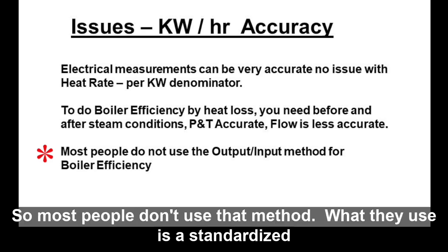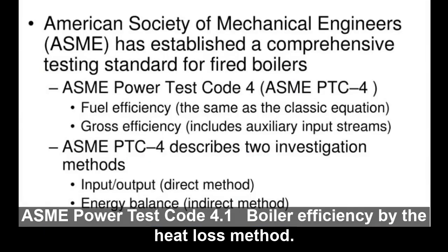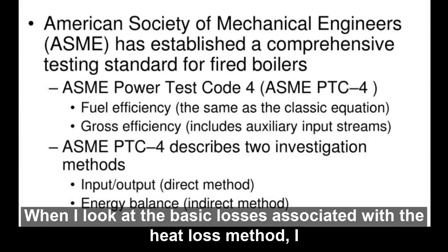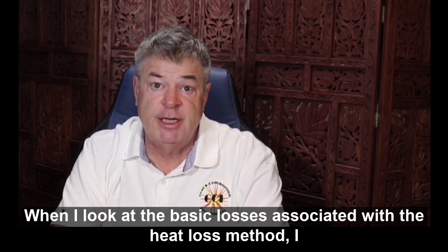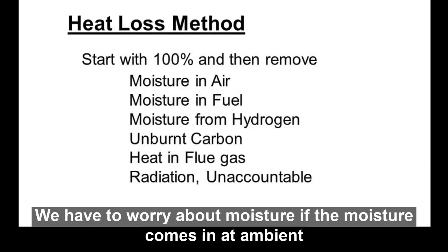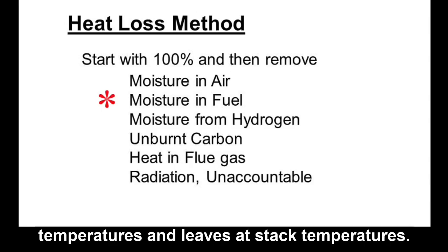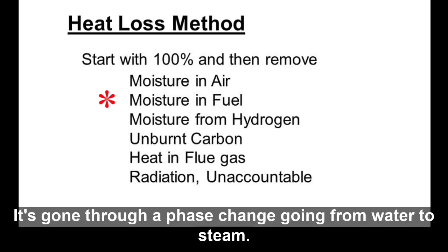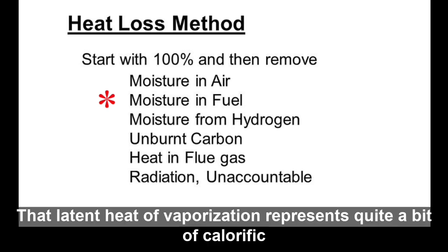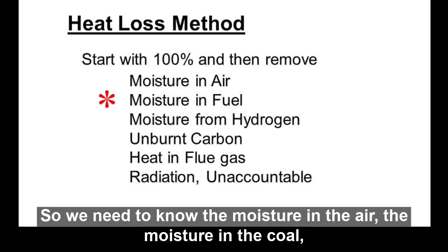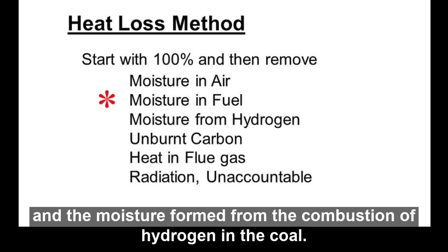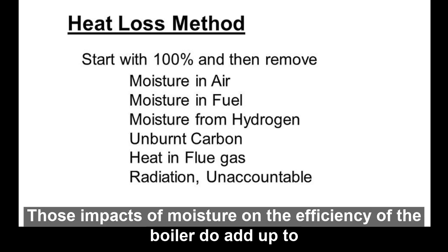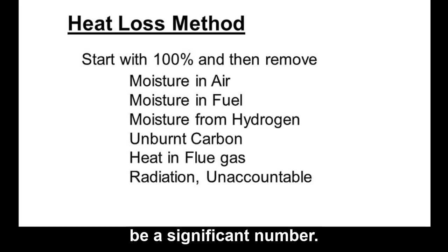What most people use is the standardized ASME Power Test Code 4.1, boiler efficiency by the heat loss method. Looking at the basic losses, we have to worry about moisture: if moisture comes in at ambient temperatures and leaves at stack temperatures, it goes through a phase change from water to steam. That latent heat of vaporization represents quite a bit of calorific value. So we need to know the moisture in the air, moisture in the coal, and moisture formed from the combustion of hydrogen in the coal.